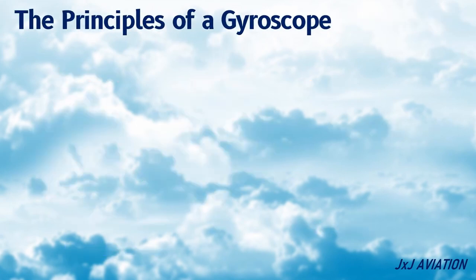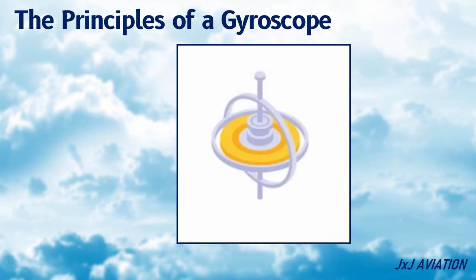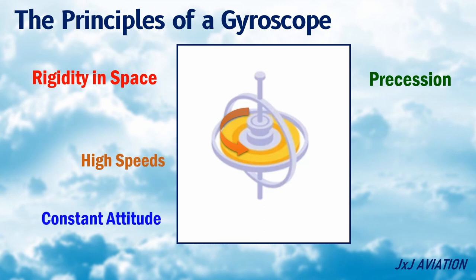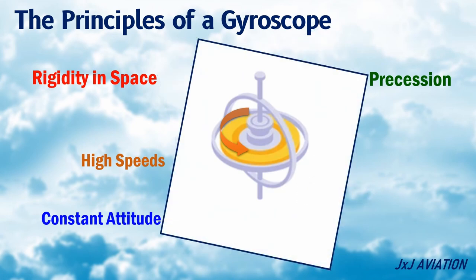The principles of a gyroscope. There are two important principles of a gyroscope: rigidity in space and precession. When the rotor is spinning at high speeds, the gyroscope will maintain a constant attitude even if the outer frame's attitude changes. This is known as rigidity in space.